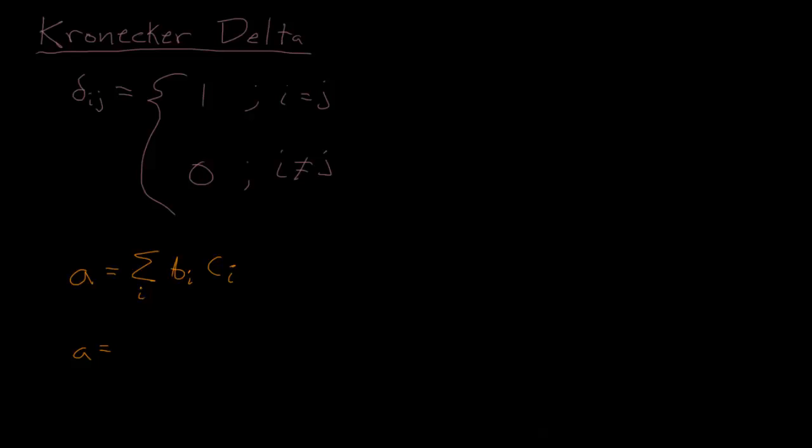So another way we could write this, we could also write a equals the sum over i and j, and again we wouldn't need to write this because the convention will imply that we're adding these. But just to be clear, the sum over i and j of bi, cj, and then we could multiply it by this Kronecker delta δij.